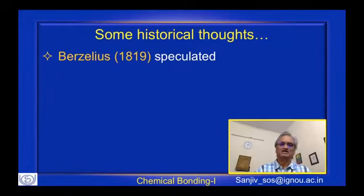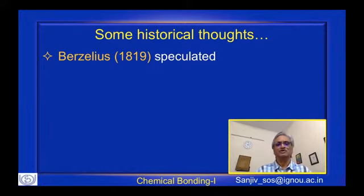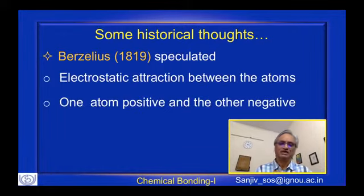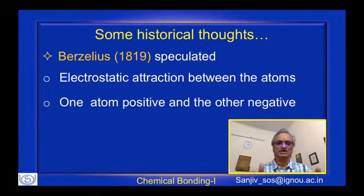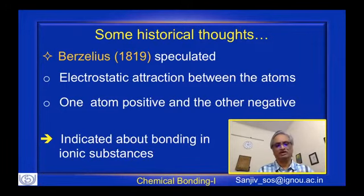An important historical development occurred around 1819 when Berzelius, a very famous scientist, speculated that there is some kind of electrostatic interaction between atoms — one atom being positively charged and one being negatively charged, interacting electrostatically. This laid the foundation for what we now call ionic bond formation.